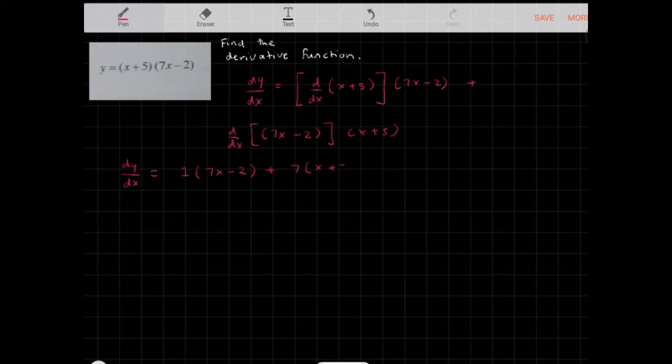In this case you get 7x - 2, plus I'm going to expand this out, plus 7x + 35. And then group the like terms together, so if I group the like terms together...